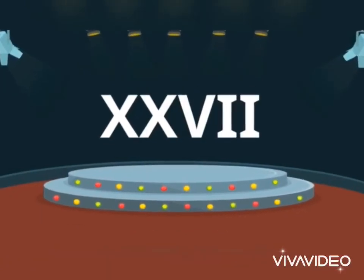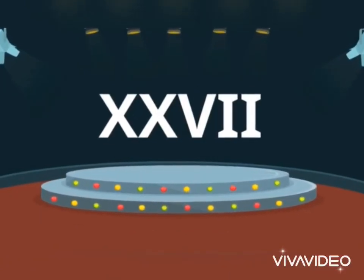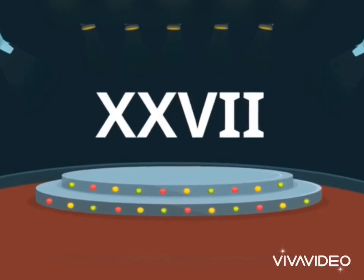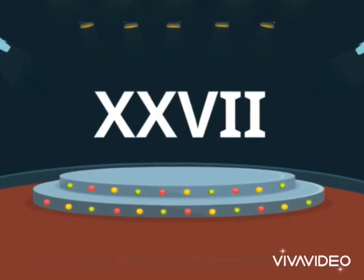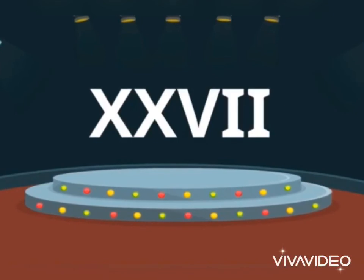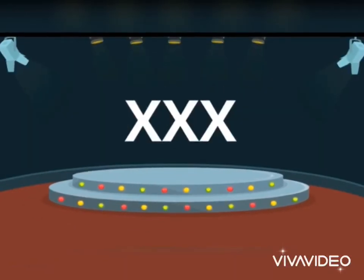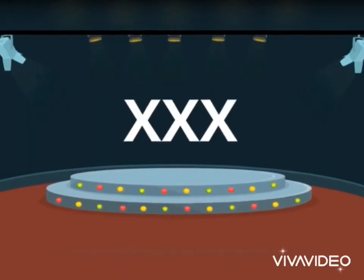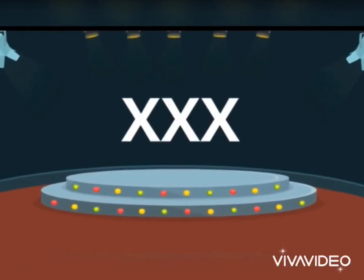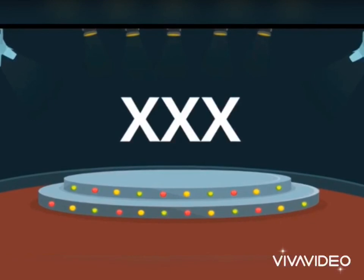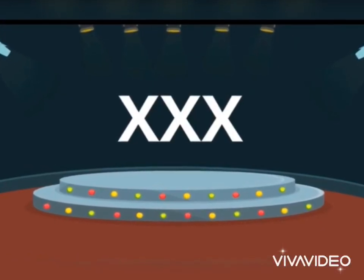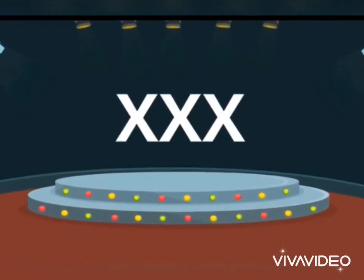Next, XXVII — X, X, V, I, I — X plus X plus 7, that is 20 plus 7, which means 27. And XXX — that means 3 times X — 10 plus 10 plus 10 is equal to 30.